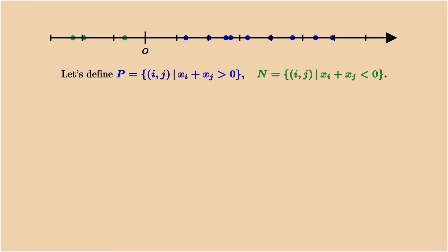Let me introduce more notations. We use P to denote all the pairs i and j such that xi plus xj is positive, and N to denote the negative pairs. We define a as the minimum of xi plus xj among the positive set, and b is the maximum of xi plus xj among the negative set.